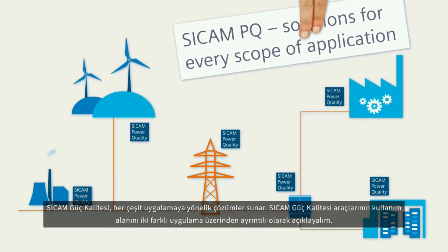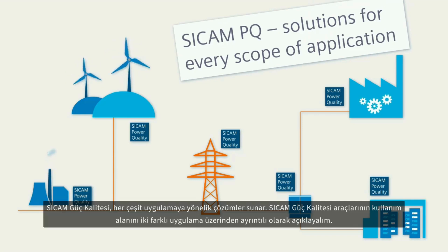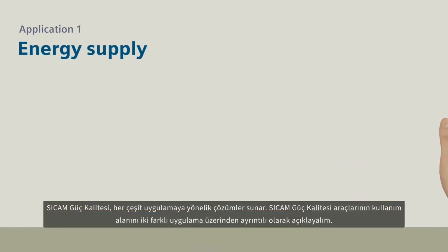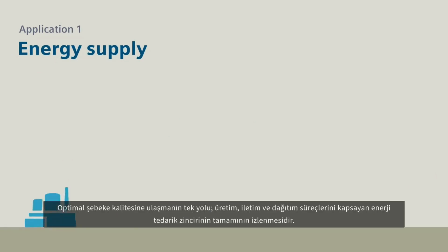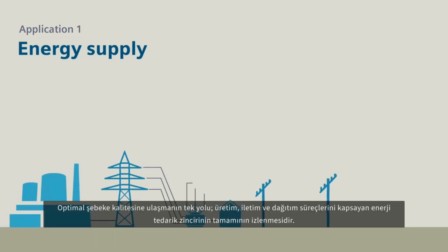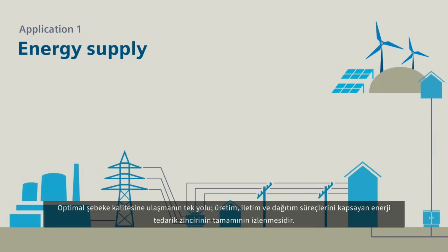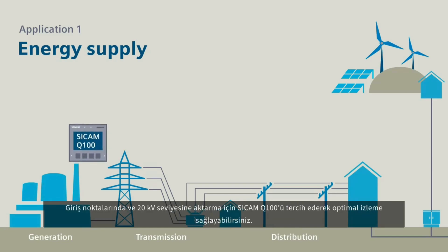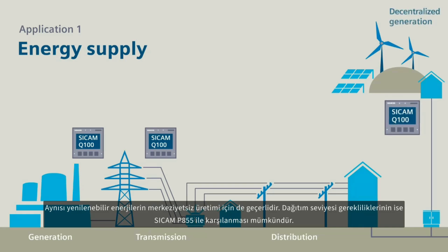Let's explain in more detail the use of Secamp Power Quality devices using two applications. Application one: energy supply. An optimal grid quality can only be achieved if the entire energy supply chain is monitored — that is, the generation, the transmission, and the distribution. At the feed-in points and for the transfer to the 20 kV level, use a Secamp Q100 for optimal monitoring. This is also true for the decentralized generation of renewable energies.